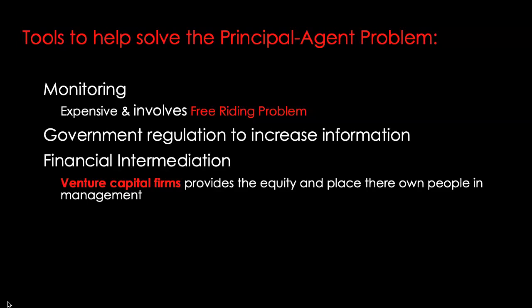A fourth possibility for reducing moral hazard in equity contracts is simply to replace them with debt contracts. Debt contracts pay a fixed amount to lenders and borrowers keep profits above that amount. As a lender under a debt contract, you don't need to worry about the borrower's behavior as long as they pay back your fixed payment. This is also why bonds had a bigger share of external financing for businesses compared to newly issued stocks. However, debt contracts are not without their own moral hazard problems.